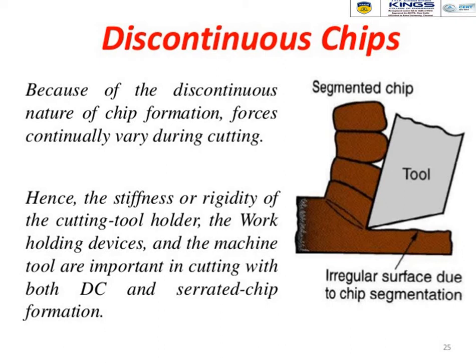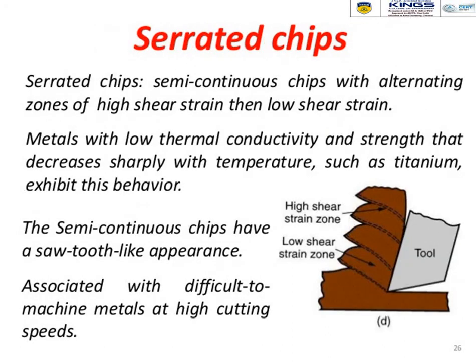Because of the discontinuous nature of chip formation, cutting forces continuously vary; hence stiffness and rigidity of the cutting tool holder, work holding devices, and machine tool are important. Serrated chips, also called segmented chips, are semi-continuous chips with alternating zones of higher and lower shear strain. Materials with low thermal conductivity and strength that decreases sharply with temperature, like titanium, exhibit this behavior. These semi-continuous chips have a saw-tooth-like appearance associated with difficult-to-machine metals at high cutting speeds.